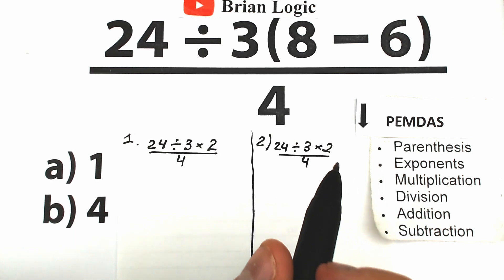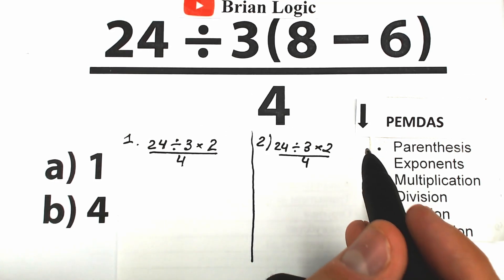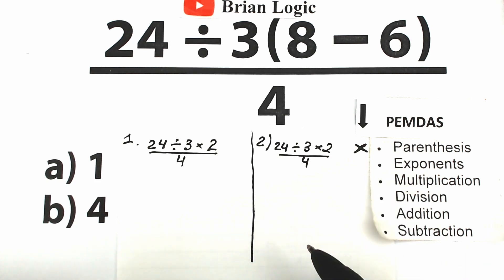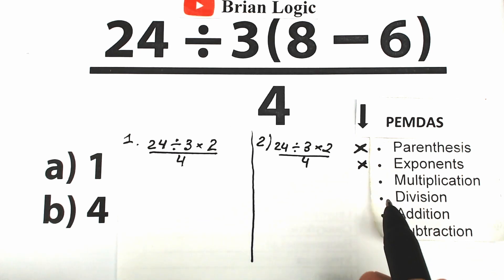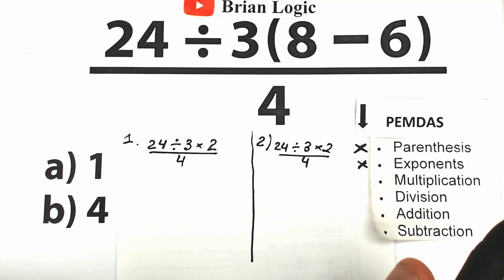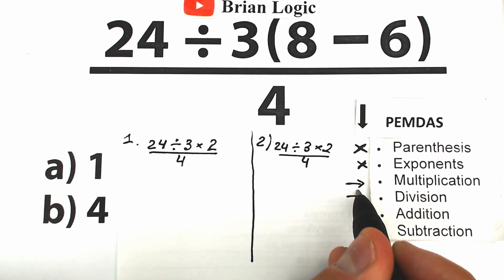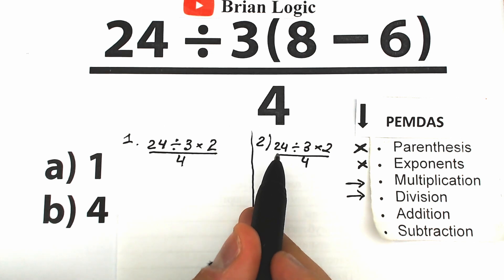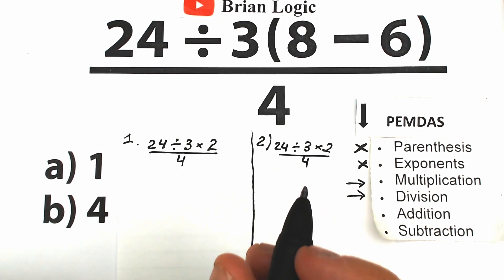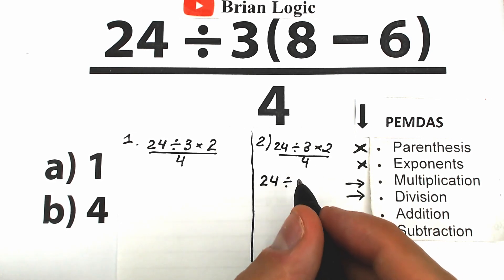Let's look at this through PEMDAS step by step. First, evaluate the expression inside parentheses — already done. There are no exponents. Now for the multiplication and division group: here's the tricky moment. A lot of students think that in the second interpretation, we should divide 24 by the whole entire product on the right side — so 3 times 2 equals 6 — and then divide everything by 4.